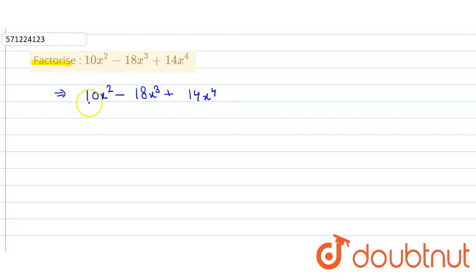So now we simply expand each term of this expression. So here first we take 10x². 10 can be written as 2 × 5, and x² is x × x.